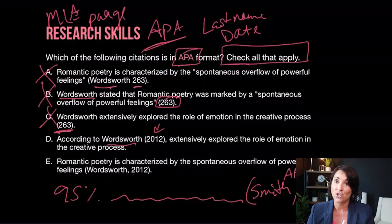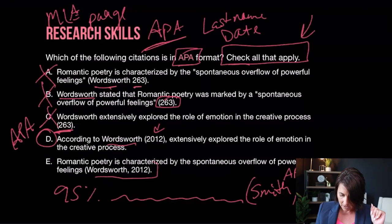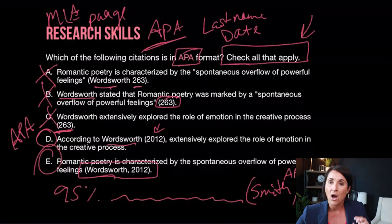On the FTCE there's only one right answer, but on the Praxis Core there can be more than one right answer — you'll see "check all that apply." D is good — D is APA for sure: "according to Wadsworth (2012)" — last name, date, APA. And E: "romantic poetry is characterized by... Wadsworth, 2012" — last name, comma, date — APA. D and E are the correct answers.